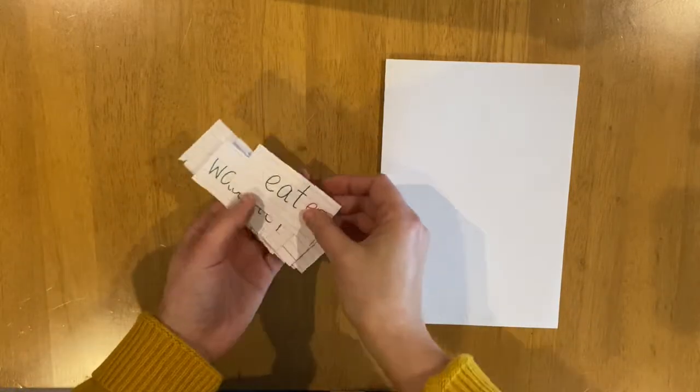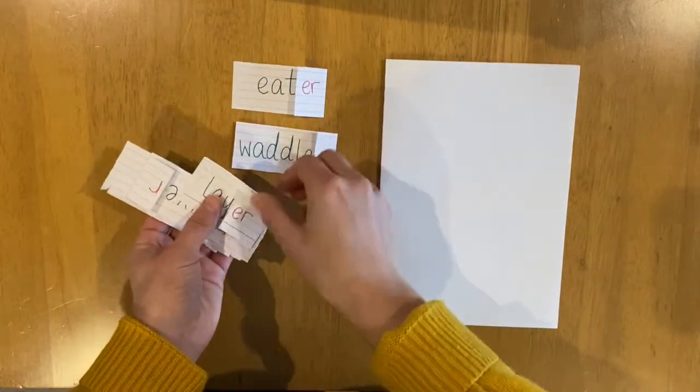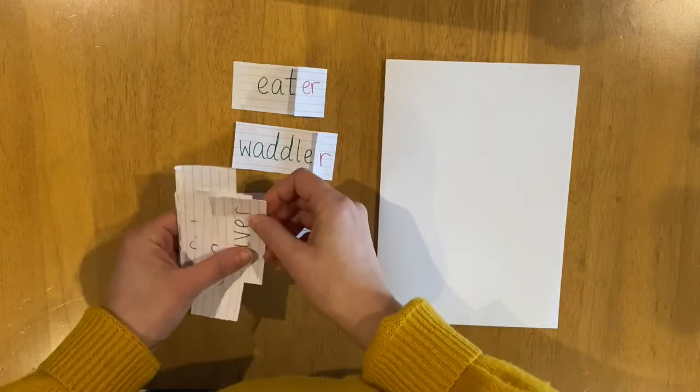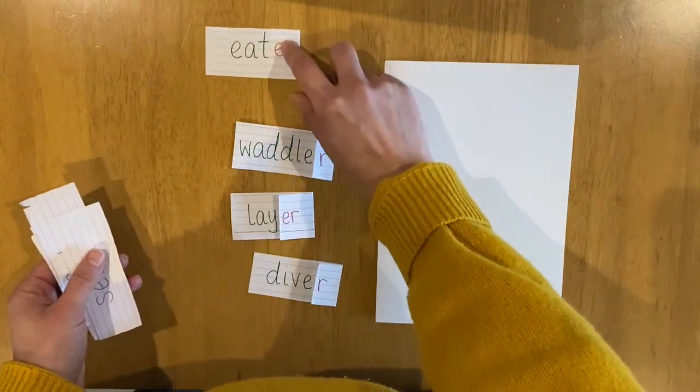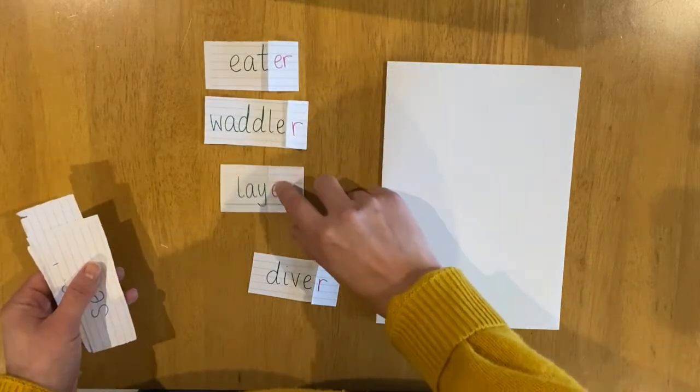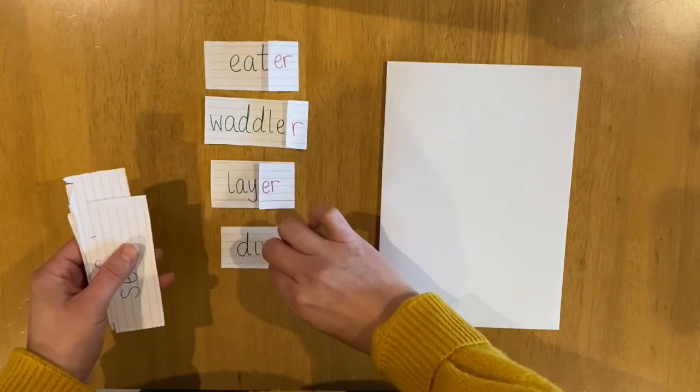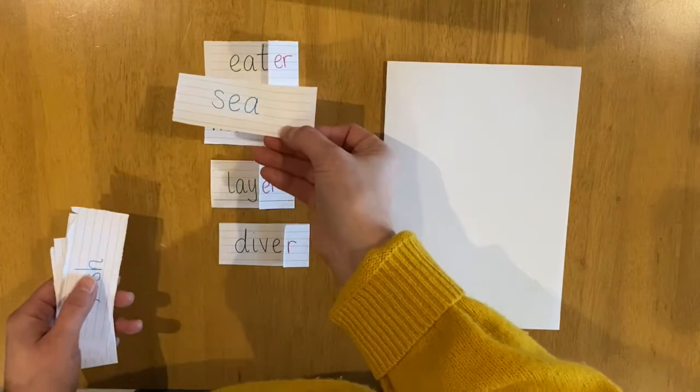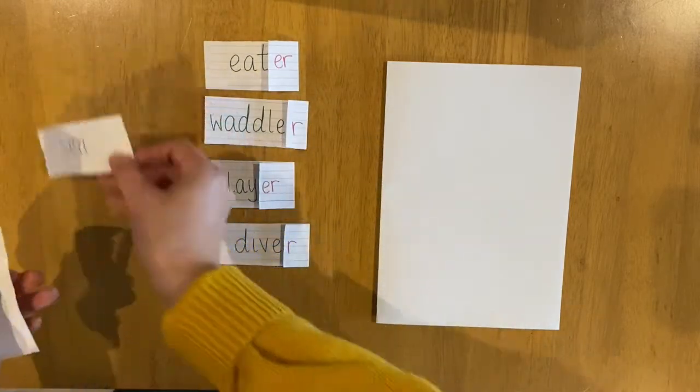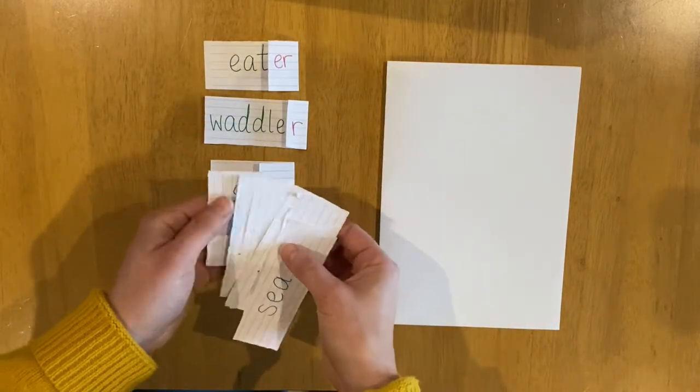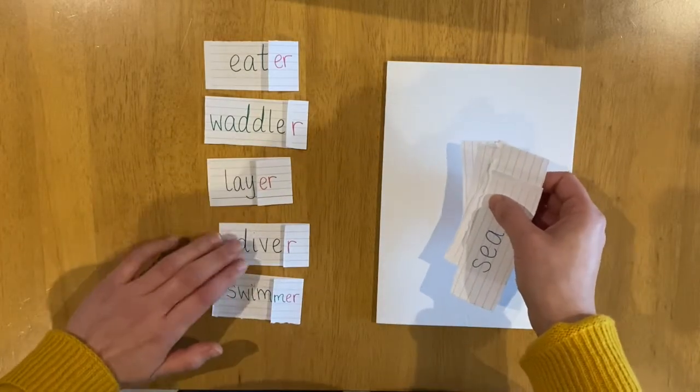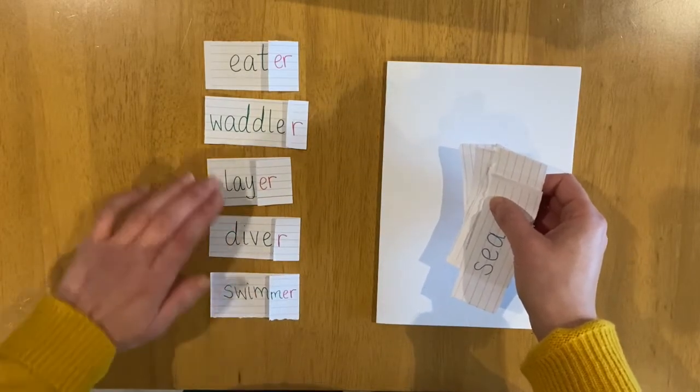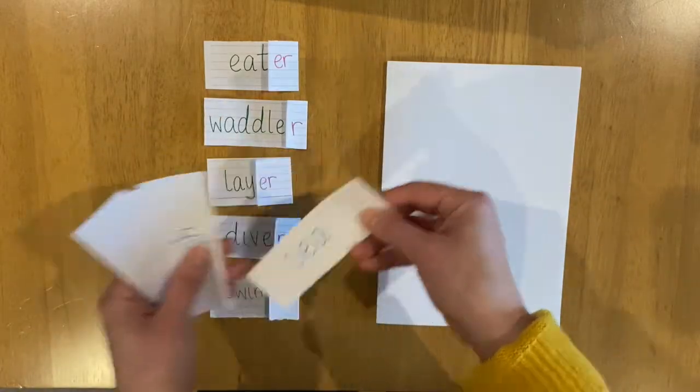The first step is to take your strips of paper that you made yesterday and arrange them like a kenning poem. So you need all of your 'er' words on one side and then the matching nouns on this side. So I'm going to arrange mine and I want you to do the same with yours. You might want to pause the video because I might be going a little bit too quick.